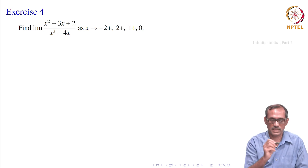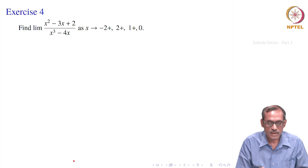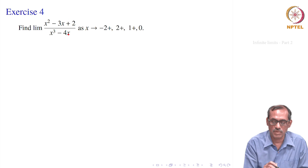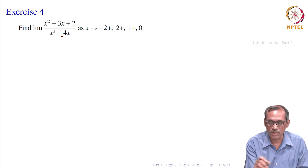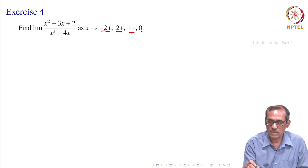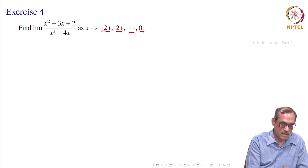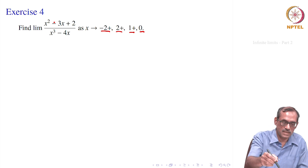The next problem: find the limit of the rational function (x² - 3x + 2)/(x³ - 4x) at x → -2+, 2+, 1+, and 0. This is a polynomial divided by a polynomial. We first rewrite it: x² - 3x + 2 = (x-2)(x-1), and x³ - 4x = x(x²-4) = x(x-2)(x+2). So after canceling (x-2) — valid since x ≠ 2 in the domain — we get f(x) = (x-1)/[x(x+2)].